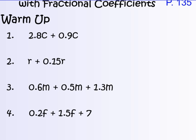I'm going to go over these with you. Hopefully number one, because we practiced this in class today, you got 3.7C. In number two, 1r plus 0.15r, you get 1.15r. Number three: 0.6m and 0.5m and 1.3m, lining up your decimal points carefully, you got 2.4m.